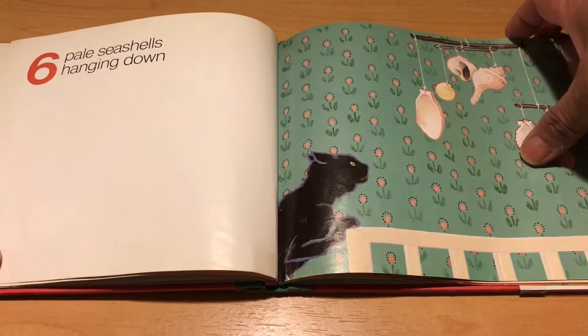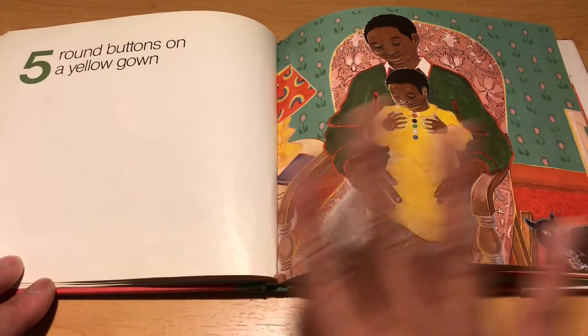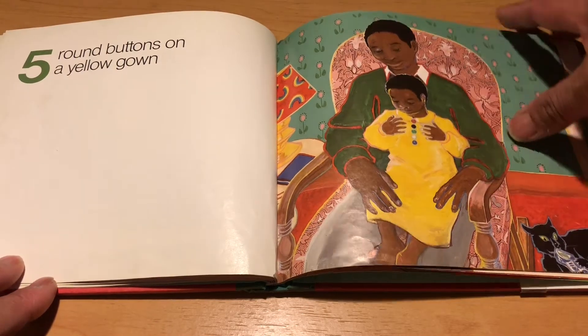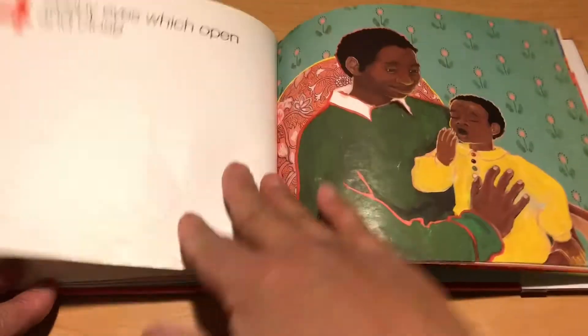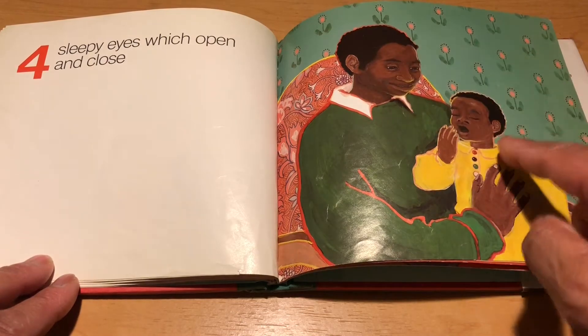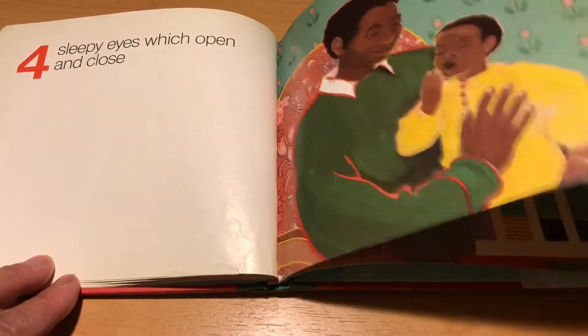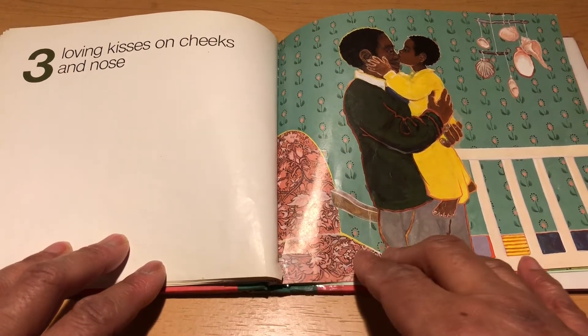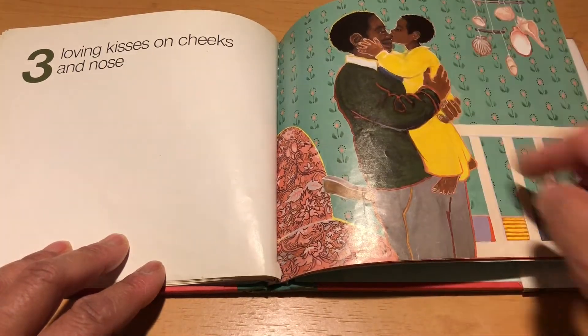Five round buttons on a yellow gown, four sleepy eyes which open and close.